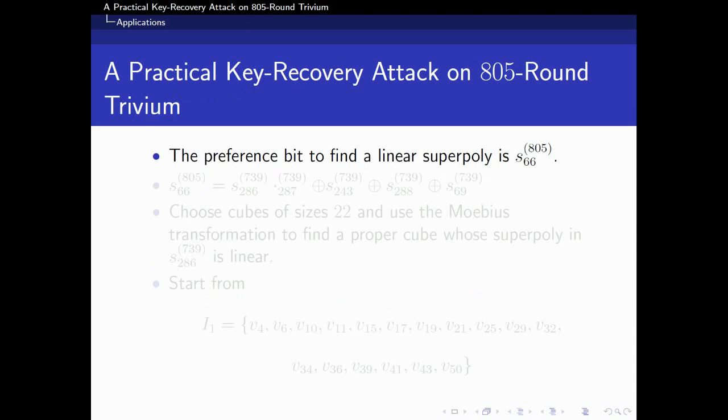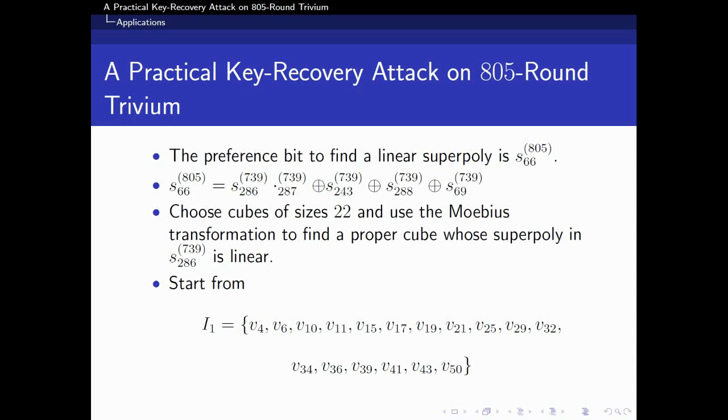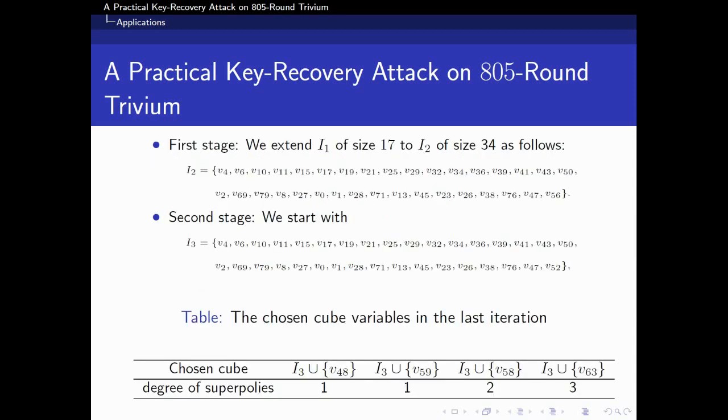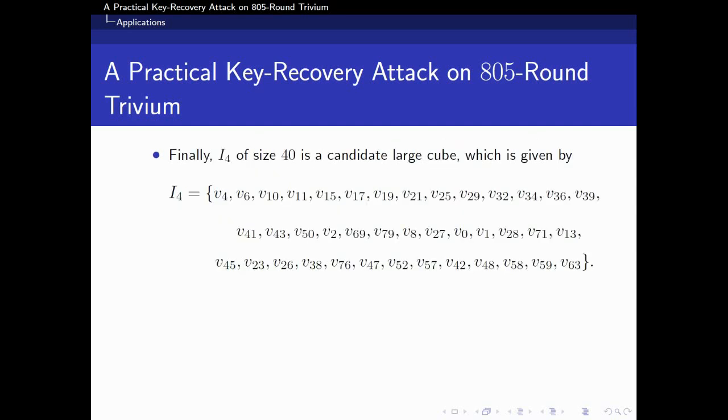With all the above methods, we make application to 805-round Trivium. First, the preference bit to find a linear superpoly is s_66. Second, we choose cubes of size 22 and use Möbius transformation to find a proper cube I_1 as our starting cube set. In the first stage, we extend I_1 by adding steep IV variables, and we obtain a cube of size 34. In the second stage, we start with I_3 and keep adding variables, such that the degree of superpoly is less than 4 in the last iteration. Finally, I_4 of size 40 is a candidate large cube which is given in the slide.